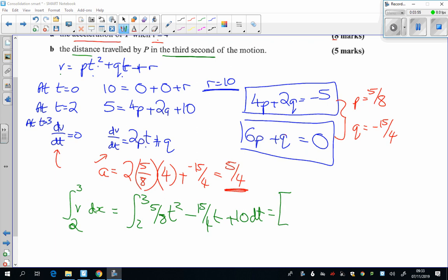Integrating that, so the power goes up by 1 and divide by the new power. So I've got 5 over 24 now because 3 times 8 is 24. I've got 15 over 8 here, T squared plus 10 T between 2 and 3. I'm just going to tap that in the calculator and it gives me 55 over 12. Lots of work to do.